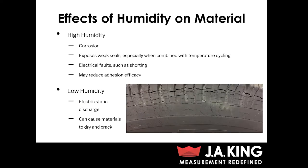Since we talked about the effects of temperature, we also have to touch on the effects of humidity, since this is also a very important parameter in environmental testing. There are effects of both high and low humidity. On the high humidity side, it can cause corrosion. It can also expose weak seals, especially when combined with temperature cycling — as a part goes through temperature cycling, you're going to have that expanding and contracting, which can facilitate moisture movement across seals. High humidity can also cause electrical faults such as electrical shorting, and may also reduce the efficacy of adhesives.